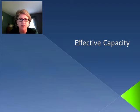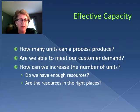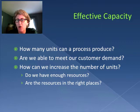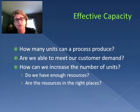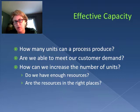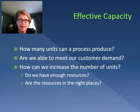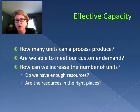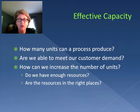We're trying to figure out how many units the process can produce. Another question we have is are we able to meet our customer demand? How can we increase the number of units if we need to? The big questions are do we have enough resources and are those resources in the right places? If you recall when we looked at the basics of a process, we have inputs being transformed to outputs, but in order to have that happen we have to have resources. So with effective capacity we're going to be taking a harder look at those resources.